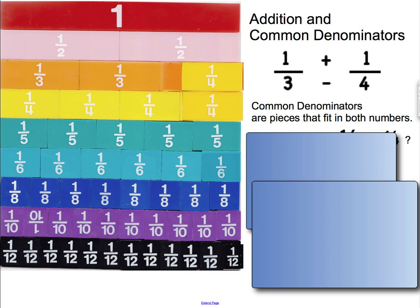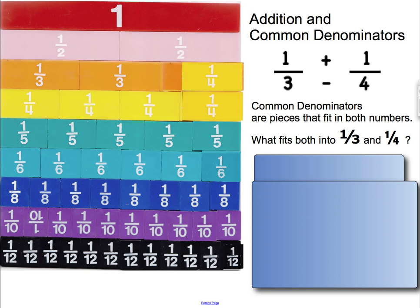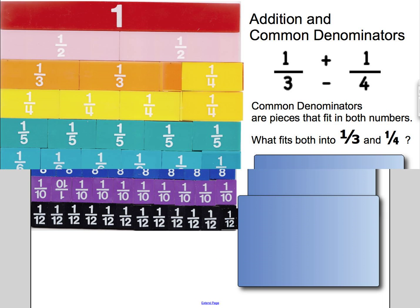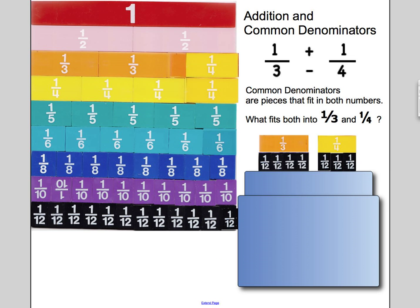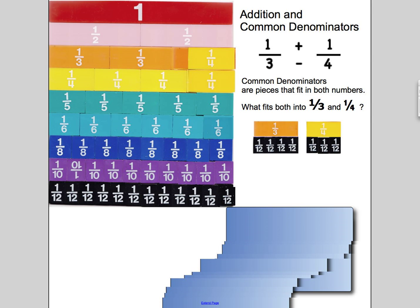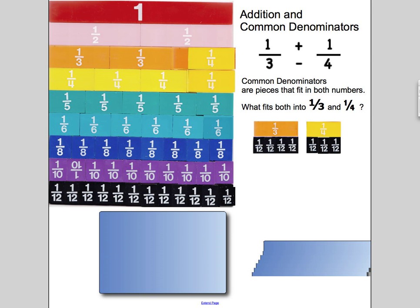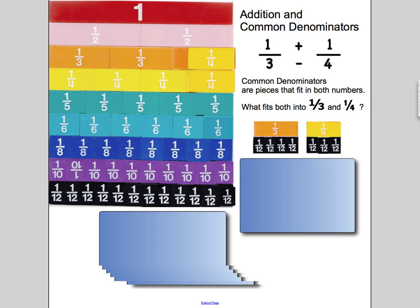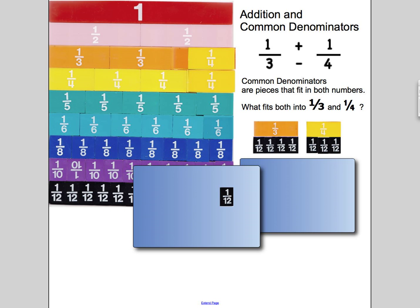Common denominators are pieces that fit into both fractions. So what fits into both one-third and one-fourth? We can see that twelfths fit into both of them, so we can replace the one-third with twelfths. That's the only piece that fits into both, as far as these go.